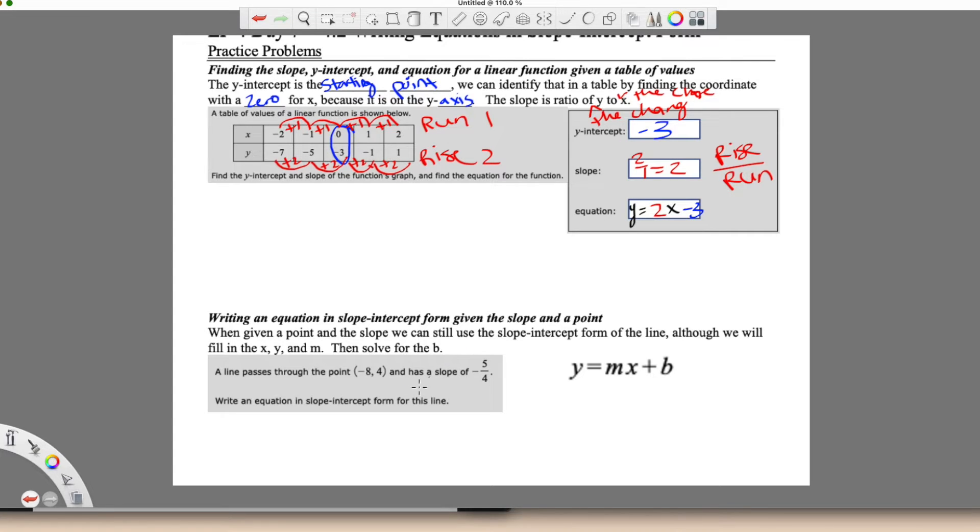All right, so down here we have when given a point and a slope, we can still use slope-intercept form of a line, although we will fill in x, y, and m so that we can solve for b.